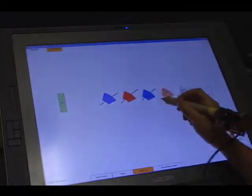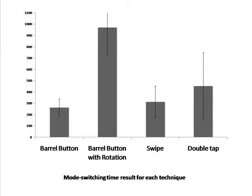Our user study results confirm that using gestures to mode switch is as fast as using the barrel button right underneath the finger, and significantly faster than the barrel button when the rotation of the pen is required in order to access the button.